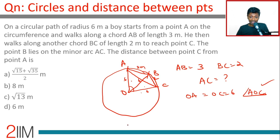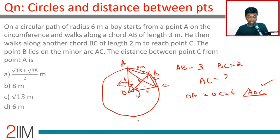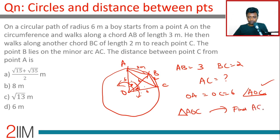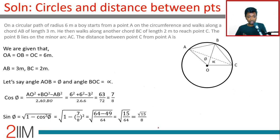How do we find angle AOC? We can find cos of sub-angle phi and cos of sub-angle alpha, then find cos of the whole angle phi plus alpha. Then plug in the cosine rule in triangle AOC to find AC. That's the approach — let's go step by step.